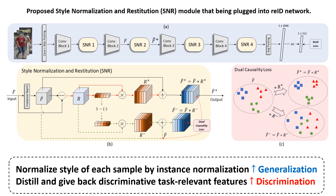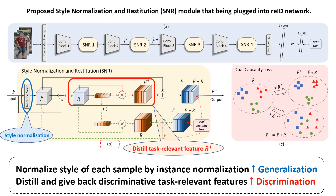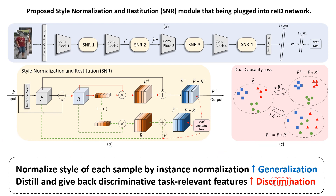The flowchart is shown here. Part A is our REID network with the proposed SNR module plugged in. Part B is the SNR module, where instance normalization is used to remove style discrepancies, followed by identity-relevant feature restitution. Part C is our novel dual causality loss to encourage the disentanglement of identity-relevant and irrelevant features.